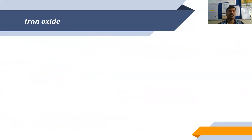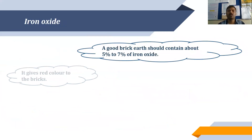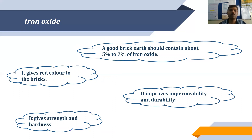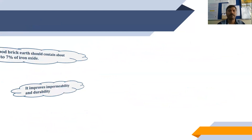The next constituent is iron oxide. A good brick earth should contain about 5 to 7% iron oxide. It gives red color to the bricks. Iron oxide — not only in bricks but also in cement — contributes color. It improves impermeability and durability, and gives strength and hardness to the brick. Iron oxide is mainly responsible for the strength properties of the brick.